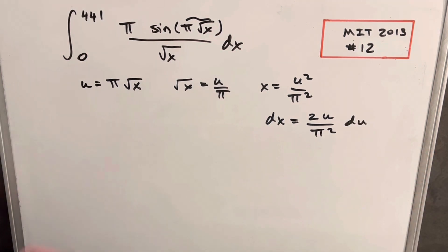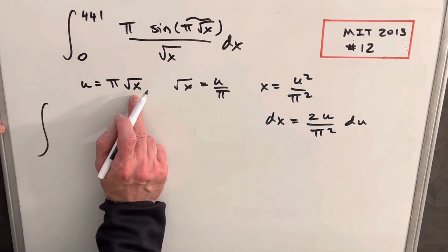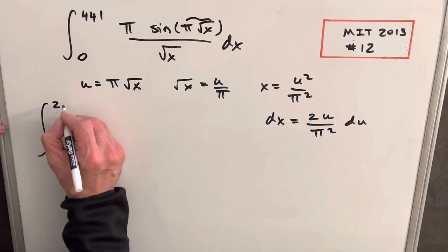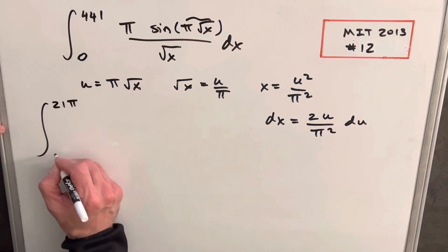Okay, so I think we're ready to make this substitution. We're going to update our bounds first. 441, plugging in here, square root of 441 is 21, so we're going to have 21 pi for our upper limit, and then just 0 for the lower.